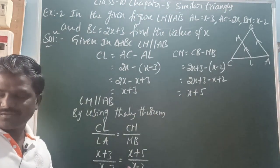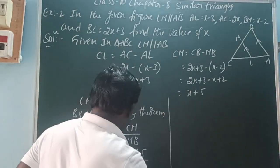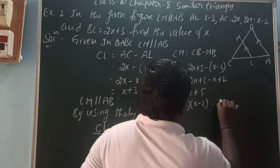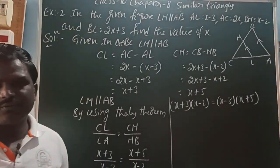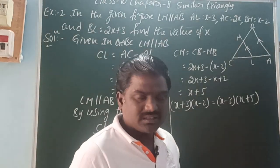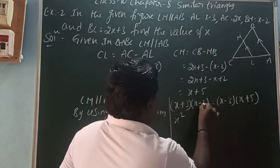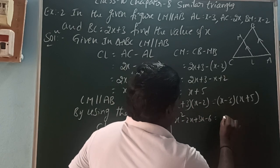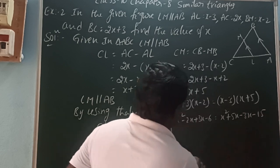Cross-multiplying, we get (x plus 3) into (x minus 2) equals (x minus 3) into (x plus 5). Expanding the left side: x squared minus 2x plus 3x minus 6, which gives x squared plus x minus 6. Expanding the right side: x squared plus 5x minus 3x minus 15, which gives x squared plus 2x minus 15.